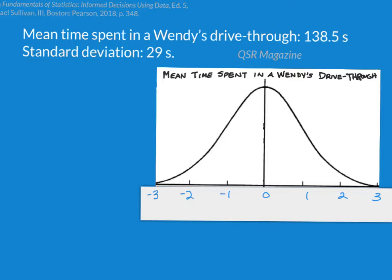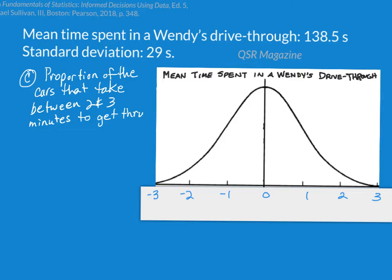Let's talk some more about that Wendy's drive-thru. Let's look at some more probabilities having to do with how long it's going to take you to get through that drive-thru. Let's say I want to know the proportion of the cars that take between two and three minutes to get through the drive-thru. So I'm going to have to convert two minutes to 120 seconds, and three minutes, of course, is 180 seconds.